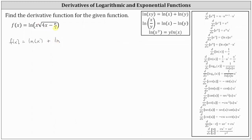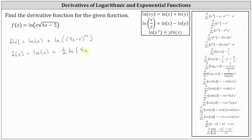Let's write the square root using a rational exponent, which gives us natural log of the quantity four x minus five raised to the power of one-half. From here, we can use the power property of logarithms — the natural log of x to the power of y equals y times natural log x — so f of x equals natural log x plus one-half times natural log of the quantity four x minus five.